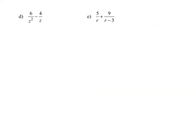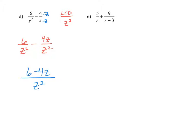Example D is 6 divided by z squared minus 4 divided by z. We want to find the least common denominator — in this case it's z squared. Whenever you have variables in the denominator, the least common denominator is going to have that variable factor raised to the largest exponent. So we keep 6 over z squared, and for 4 over z we multiply the numerator and denominator by z to get 4z over z squared. Combining, the numerator is 6 minus 4z and the denominator is z squared.